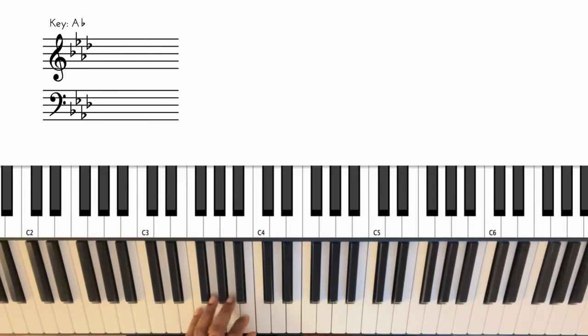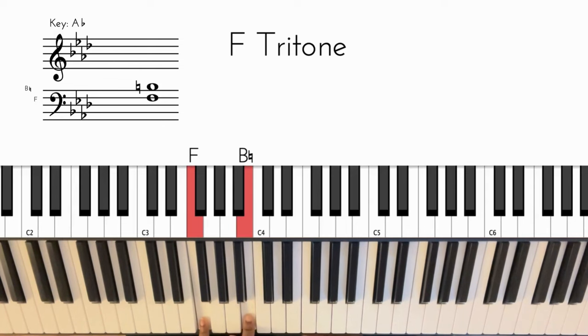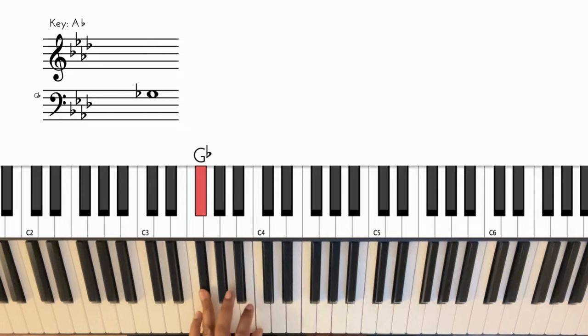And then we just finish it off with that tritone pair to reset. F and B in my left hand. And I bring that up a half step to F sharp and C.